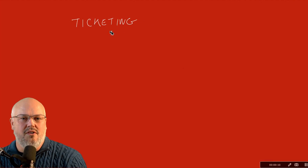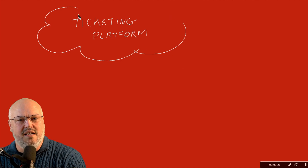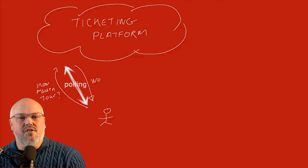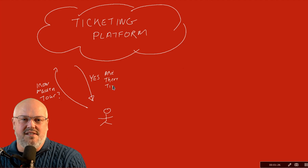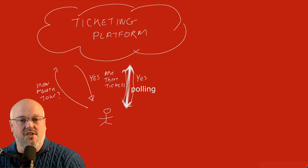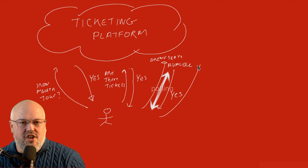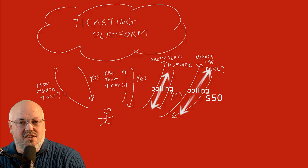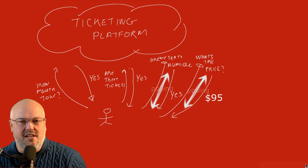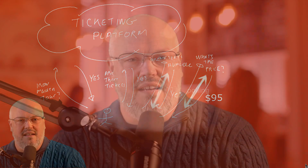Polling is when you keep asking an API or a system for its status, for an update, or a check to see if something has changed. Imagine the scenario: you're on a web page and you keep refreshing it to find out the status of something — like has Iron Maiden released a new tour, are the tickets available, are the seats I want still available, or have the prices changed? You keep refreshing and refreshing because that's the only way you can get that data. That is polling.